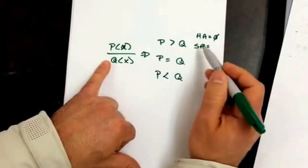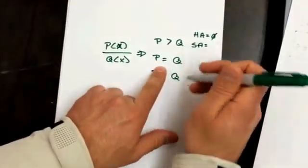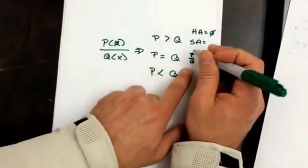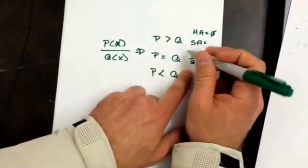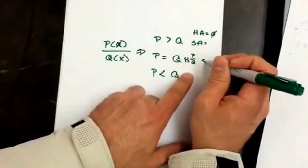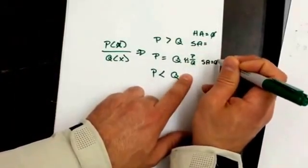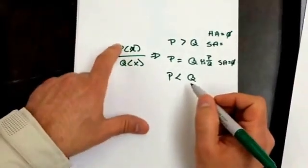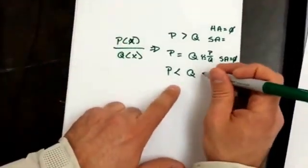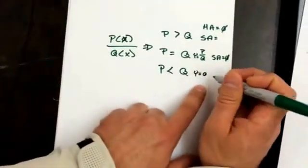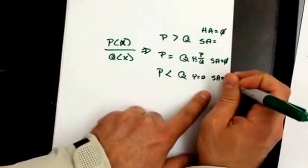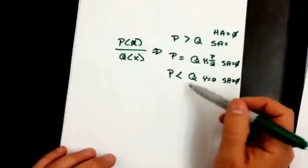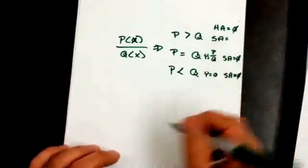You're always going to have one or the other. When the degree of P equals the degree of Q, you looked at the leading coefficients and there was a horizontal asymptote, so there's not going to be a slant asymptote. When the degree of P is less than the degree of Q, you have a horizontal asymptote at Y equals zero, and again there's not going to be a slant asymptote. You're either going to have a horizontal or a slant asymptote.